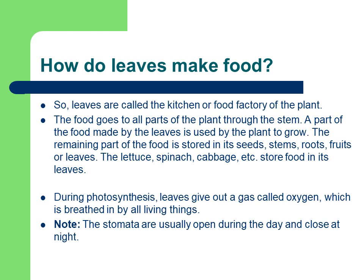Here is a recap. Leaves are called the kitchen or food factory of the plant. The food goes to all parts of the plant through the stem. A part of the food made by leaves is used by the plant to grow, and the remaining part is stored in the seeds, stems, roots, fruits or leaves. Lettuce, spinach, cabbage etc. store food in the leaves. During photosynthesis, leaves give out oxygen which is breathed in by all living things. The stomata are usually open during the day and close at night, so plants make food during the day.